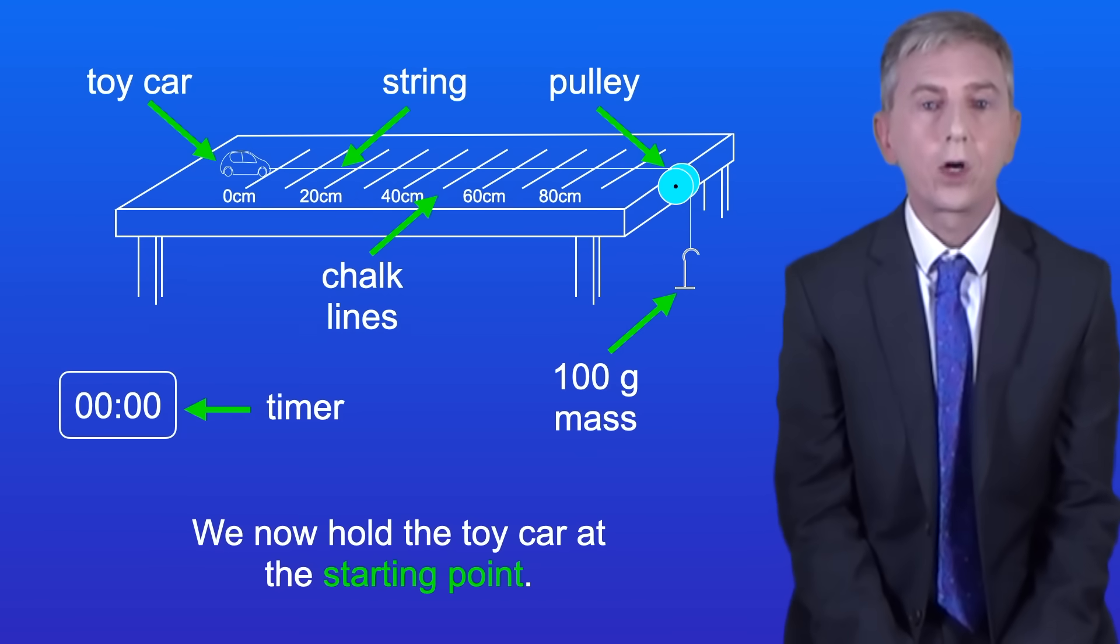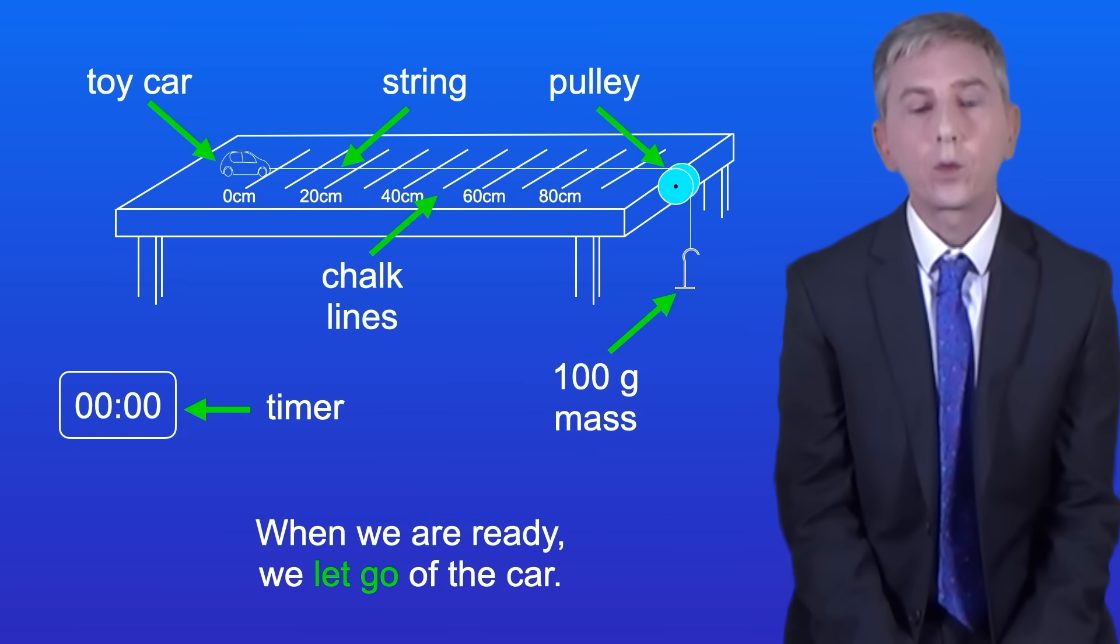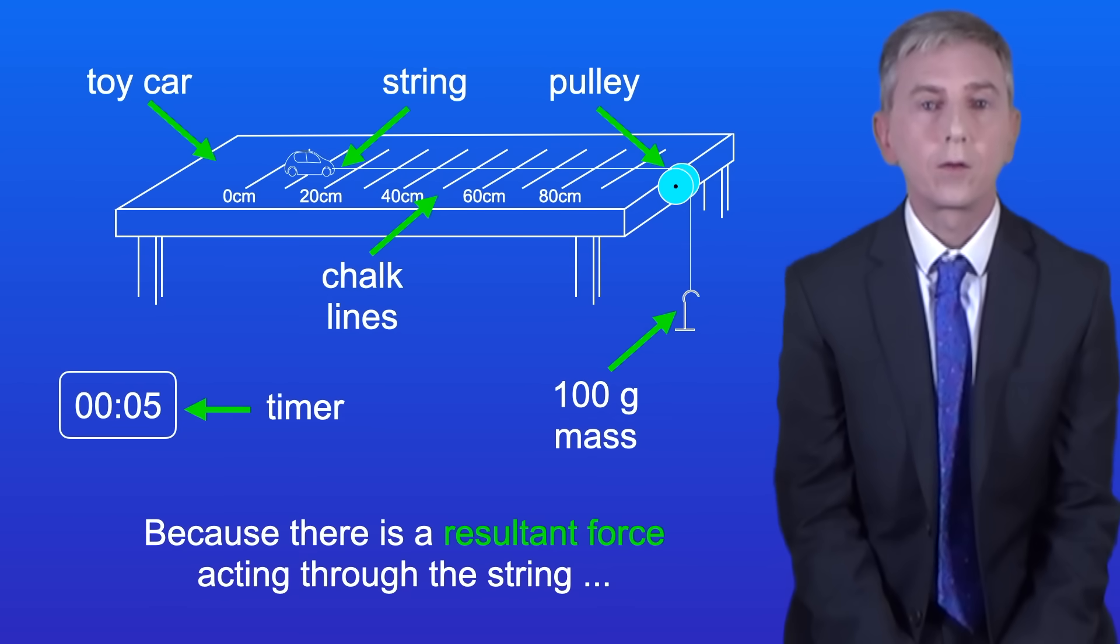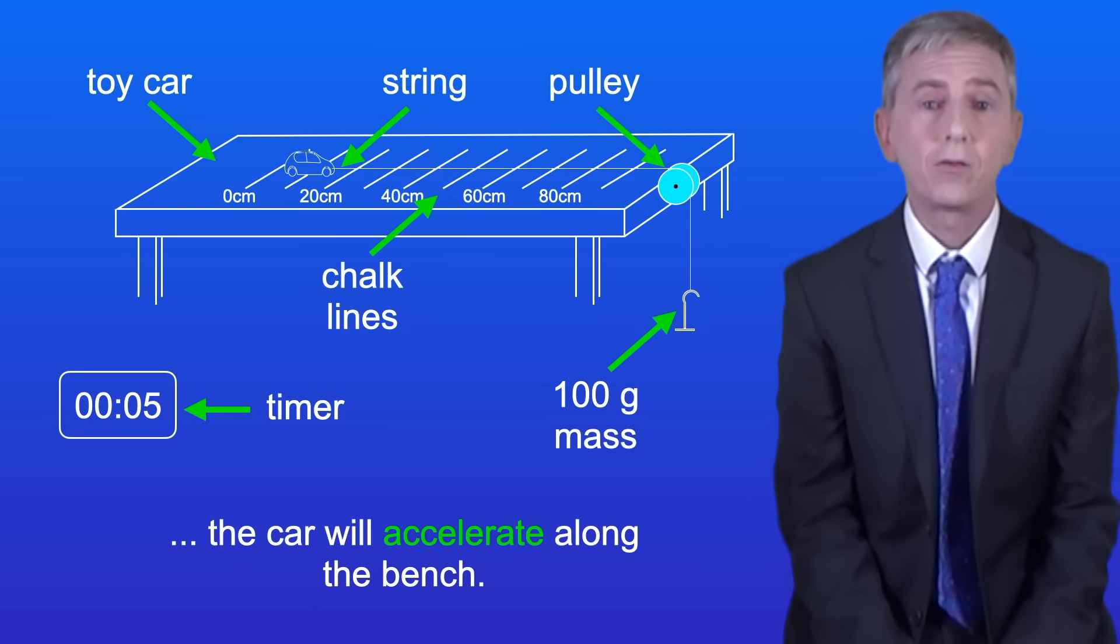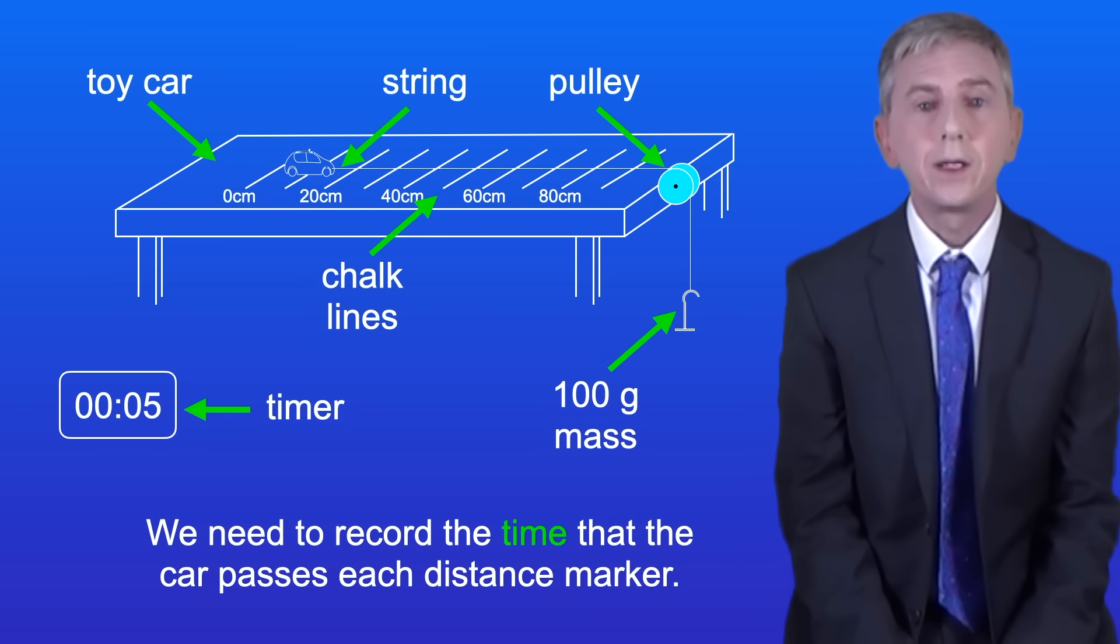We now hold the toy car at the starting point and when we're ready we let go of the car. Because there's a resultant force acting through the string, the car will accelerate along the bench. We need to record the time that the car passes each distance marker.